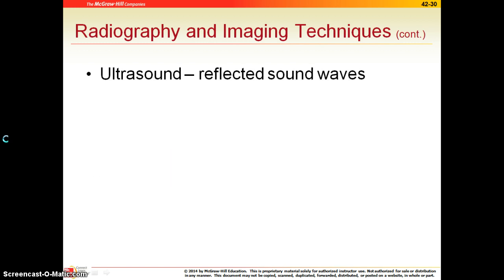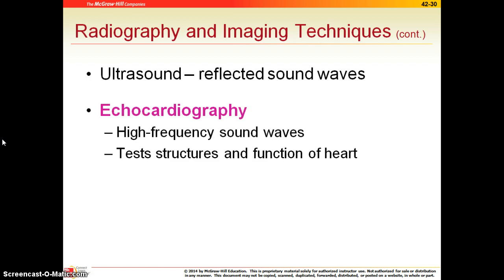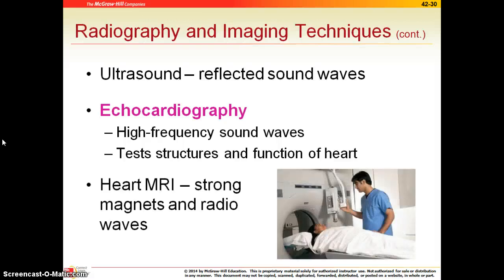Ultrasound uses sound waves, and when they bounce off objects inside the body they create a picture on a screen. Echocardiography uses those same sound waves — ultrasound — and because we have the term 'cardio,' we're talking about looking at the heart. They also have a heart MRI. All MRIs use magnets and radio waves — no radioactive material — to bounce off structures inside the body and create a computer image.